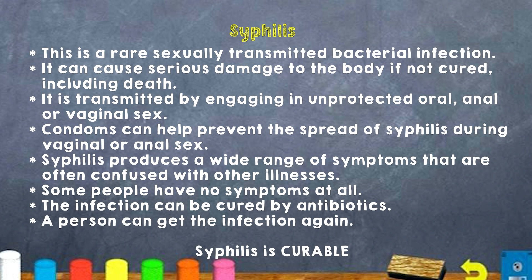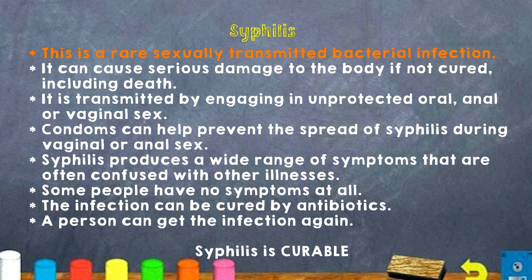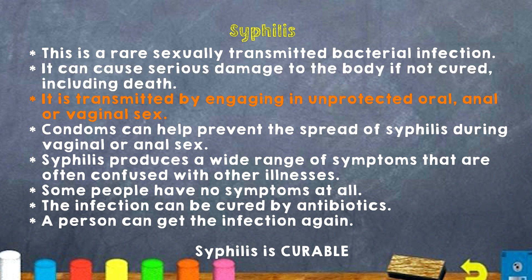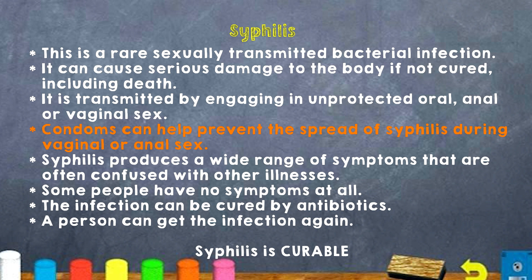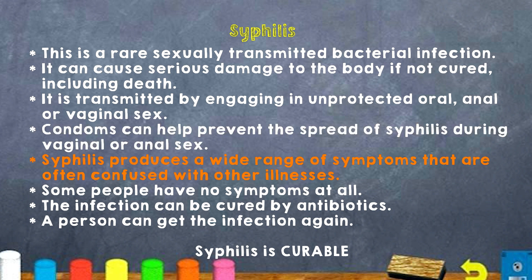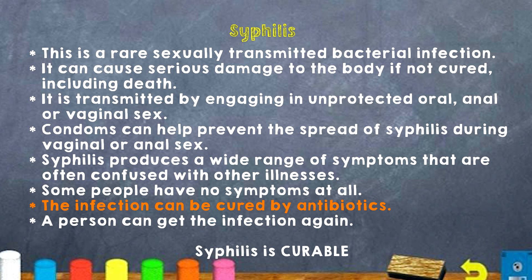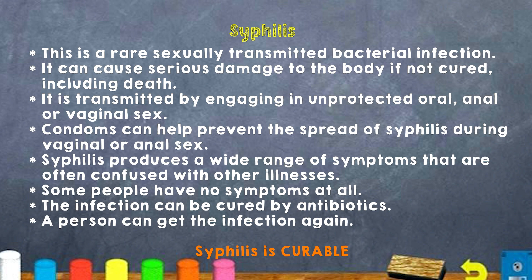The next one we'll look at is Syphilis. Syphilis is a rare sexually transmitted bacterial infection. It can cause serious damages to the body if not cured, including death. It is passed along by having unprotected sex. Condoms can help prevent the spread of Syphilis during any sexual activity. Syphilis also presents a wide range of symptoms that are often confused with other illnesses. Some people have no symptoms at all. The infection can be cured with antibiotics; however, a person can get infected again. Syphilis is curable.